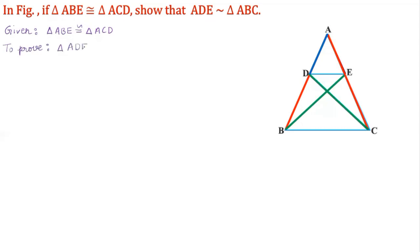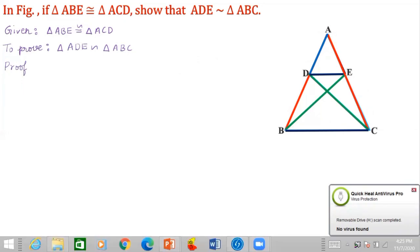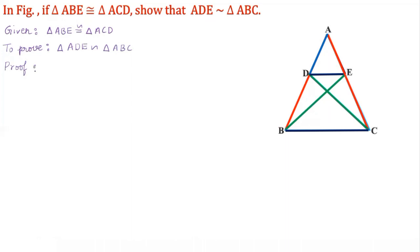Now we have to prove that triangle ADE is similar to triangle ABC. Observe triangle ADE and triangle ABC — this is what we need to prove. Let us write the proof in triangle ADE and triangle ABC.